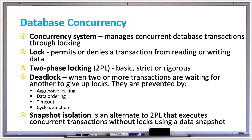Lock scope is the set of data that is reserved by a lock. It's typically a single row of data so that other rows can be accessed by other transactions. Lock scope could also be a block or the whole table in the case where a transaction needs to access several rows of data, and could also include indexes.